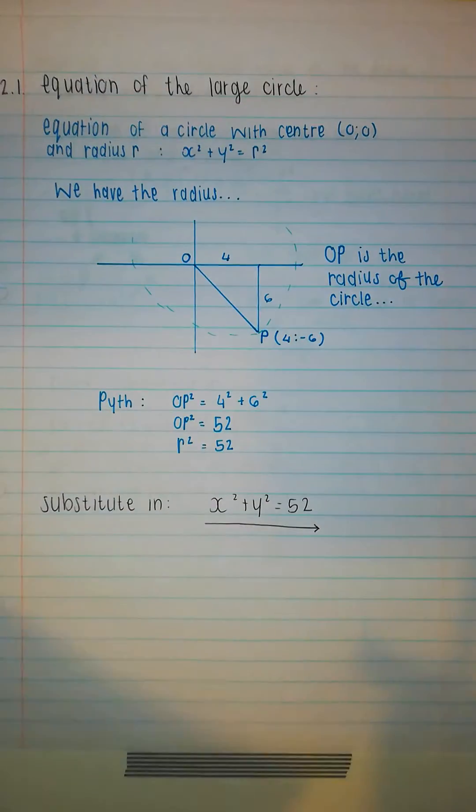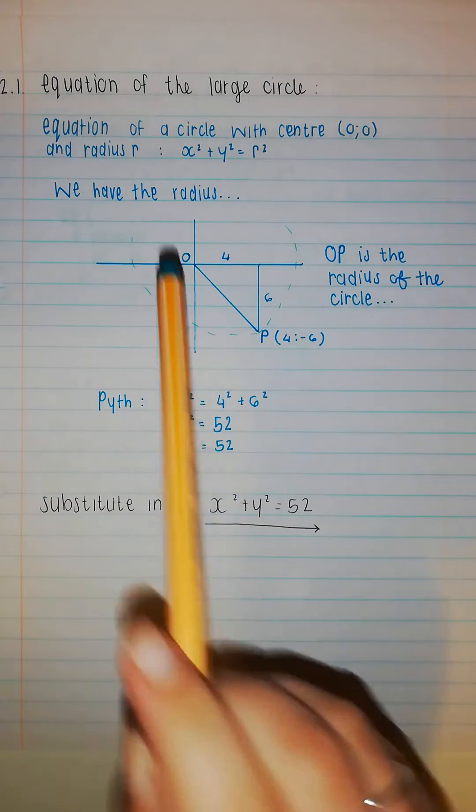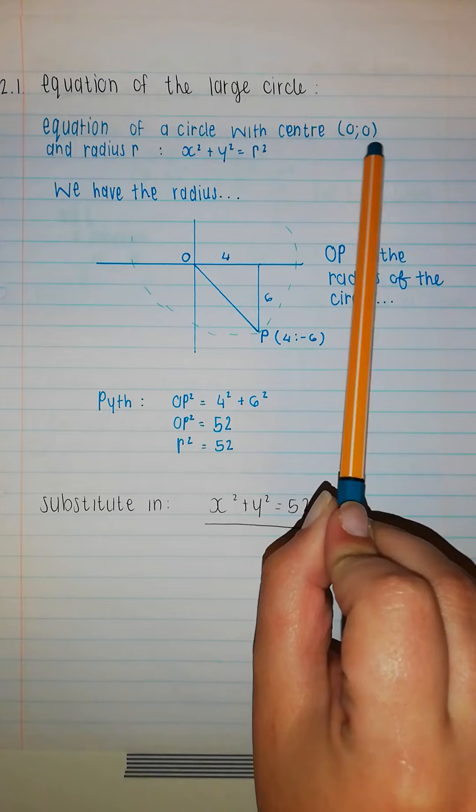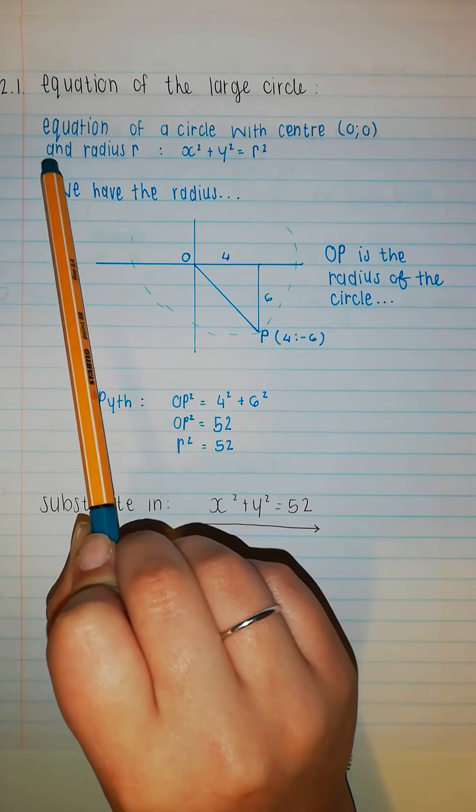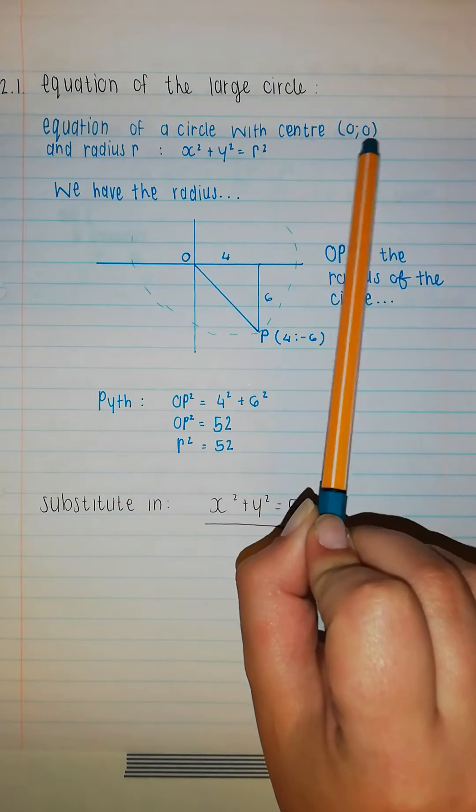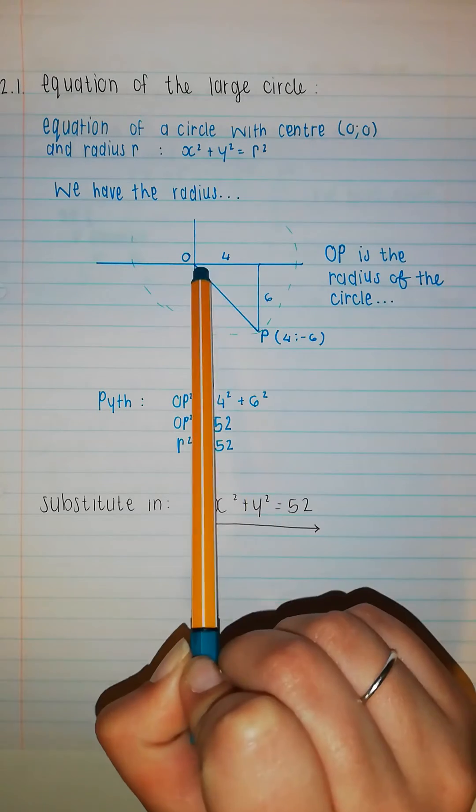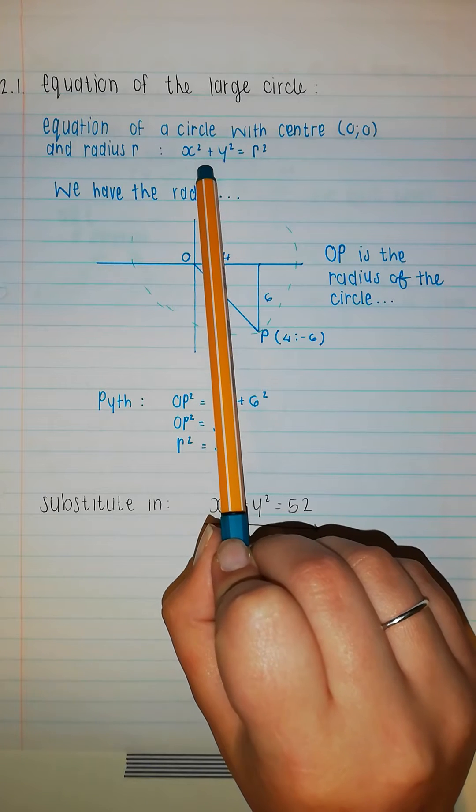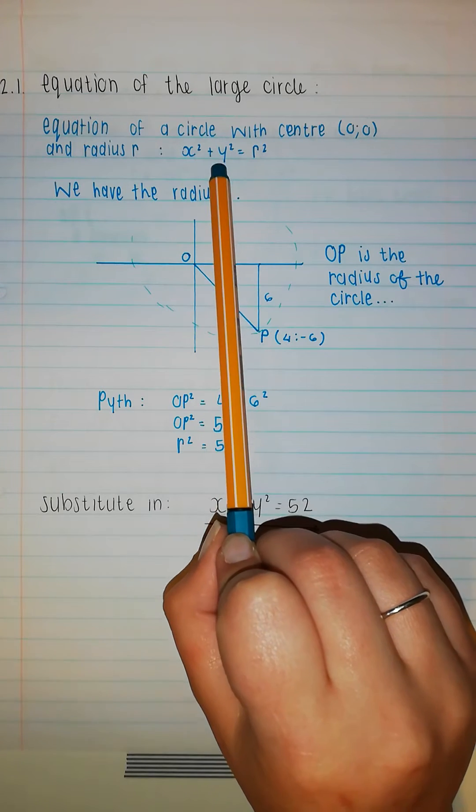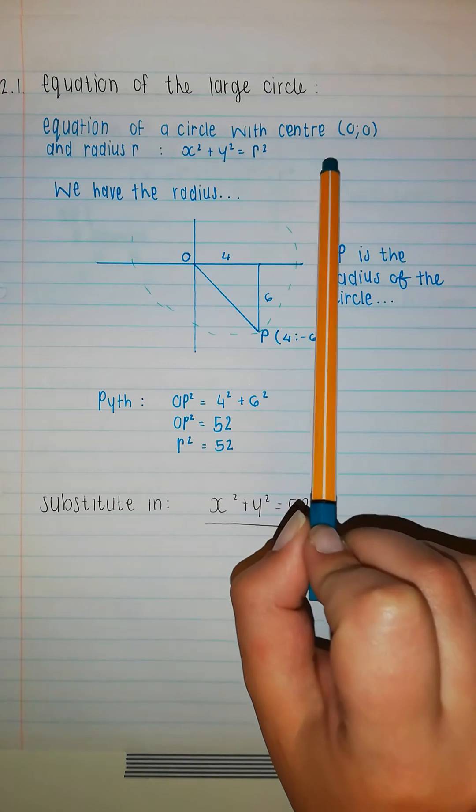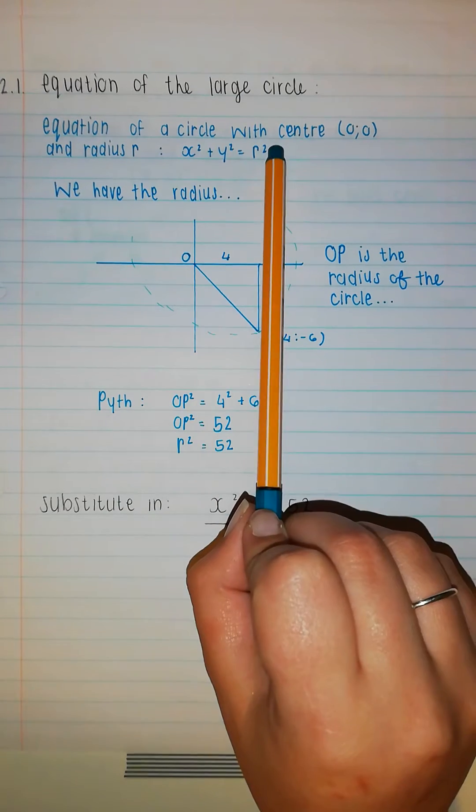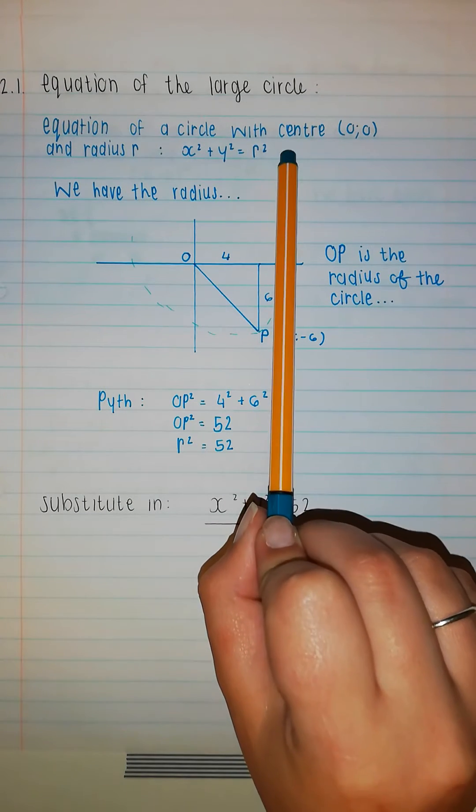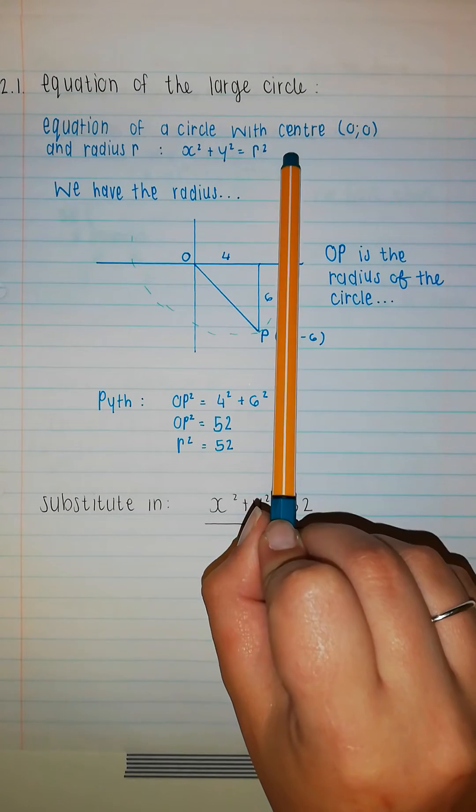Now they don't say in a specific form, so side note, what you should know: equation of a circle with center (0,0) and radius r. Center (0,0) just means center at the origin in the middle, and a radius r is x squared plus y squared equals r squared. That being said, this is on your information sheet, so you don't have to worry too much, but you do have to know when to use it.